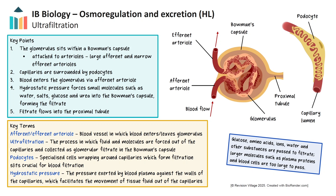But not everything passes freely. The inner lining of the Bowman's capsule contains specialised cells called podocytes. These cells have finger-like extensions that leave small gaps between them, helping to form part of the filtration barrier. The fluid that collects in the Bowman's capsule is now called the filtrate. From here, the filtrate flows into the proximal convoluted tubule, where selective reabsorption takes place. Useful substances like glucose, amino acids, and much of the filtered water and sodium ions are reabsorbed back into the bloodstream through the surrounding peritubular capillaries. What remains includes toxins, excess ions and urea, which will continue through the nephron to eventually become urine.